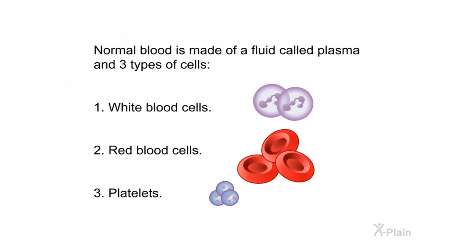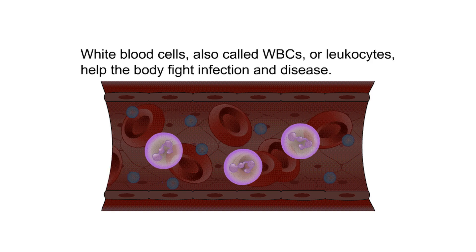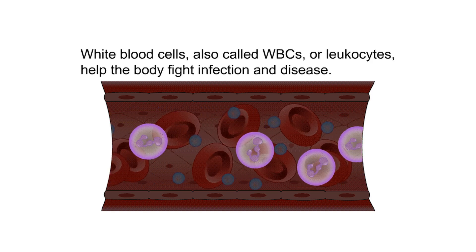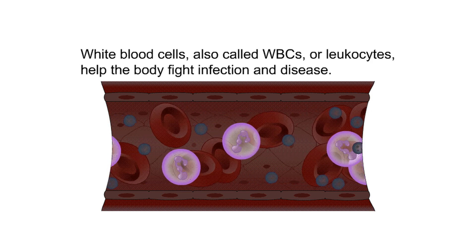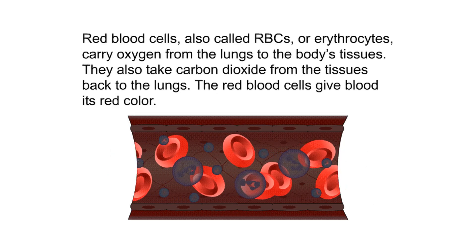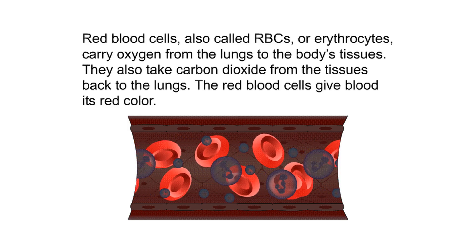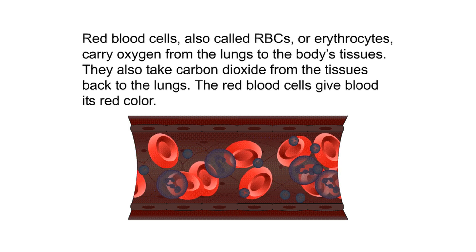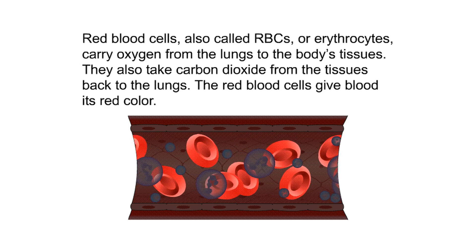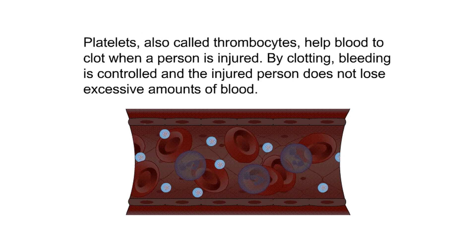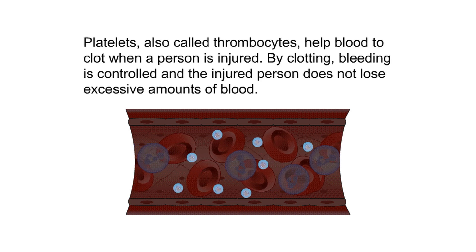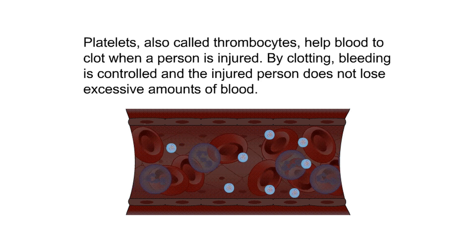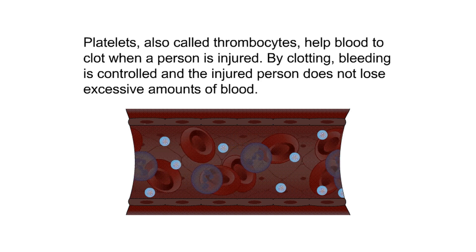Normal blood is made of a fluid called plasma and three types of cells: white blood cells, red blood cells, and platelets. White blood cells, also called WBCs or leukocytes, help the body fight infection and disease. Red blood cells, also called RBCs or erythrocytes, carry oxygen from the lungs to the body's tissues and take carbon dioxide back to the lungs. Platelets, also called thrombocytes, help blood clot when a person is injured, controlling bleeding.